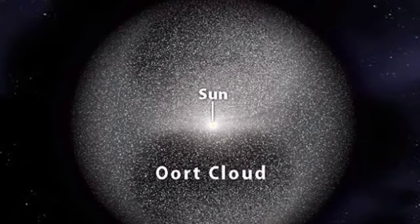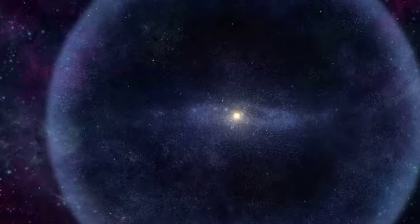Oort cloud, immense, roughly spherical cloud of icy small bodies that revolve around the sun at distances typically more than 1,000 times that of the orbit of Neptune.